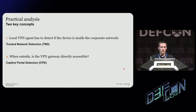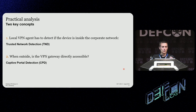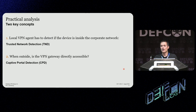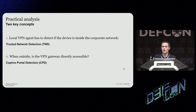Let's have a look at the components needed for Always On to work. The first one is trusted network detection. The local VPN agent must conclude whether it has to connect to the gateway or not. The algorithms implemented in VPN agents for this are called trusted network detection. When outside of the trusted network, the VPN agent needs to know if the gateway is directly accessible or not — for example, if you are behind a captive portal, you won't be able to reach the VPN gateway directly.